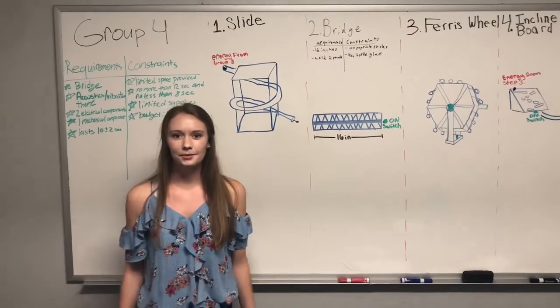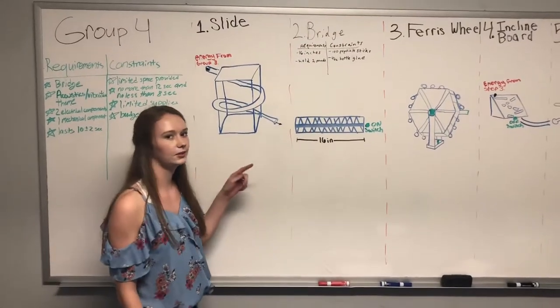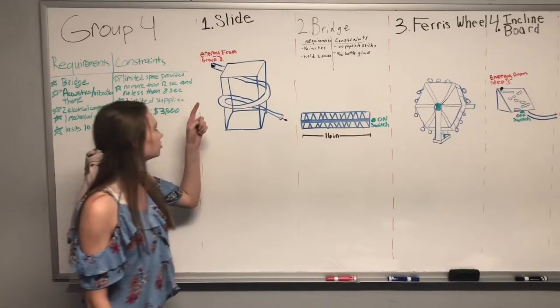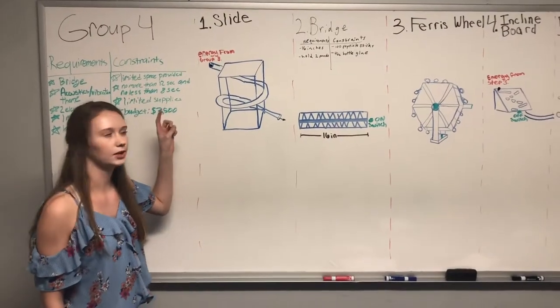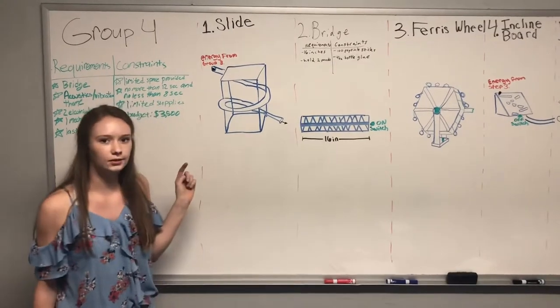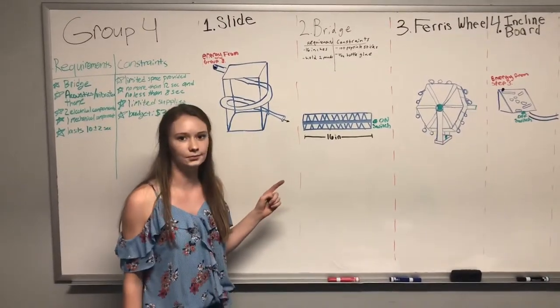The first step of our Rube Goldberg project is the slide. The slide connects a clear hose to a wooden structure using copper wire. Energy will be transferred from Group 3 into the steel ball. As the steel ball rolls down the clear tubing, it will gain momentum and transfer energy onto Step 2, the bridge.